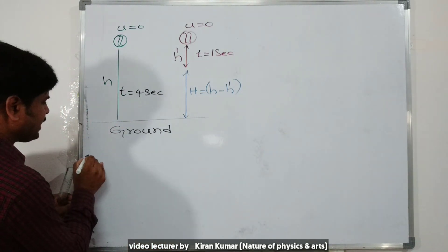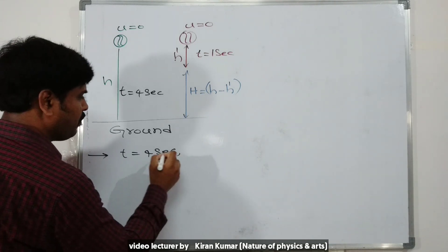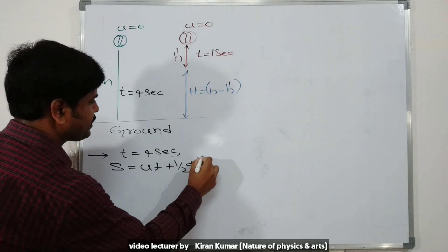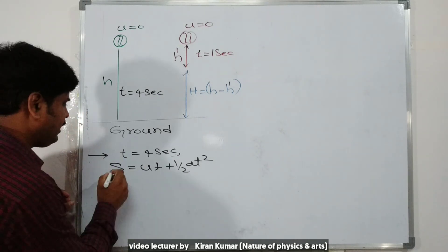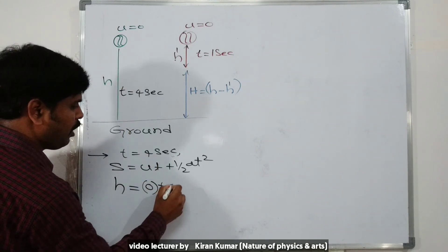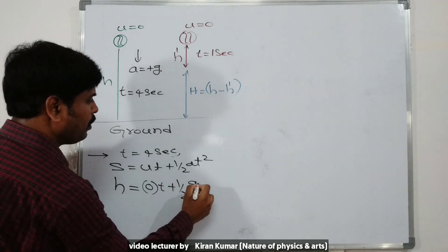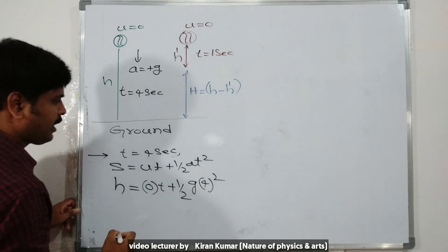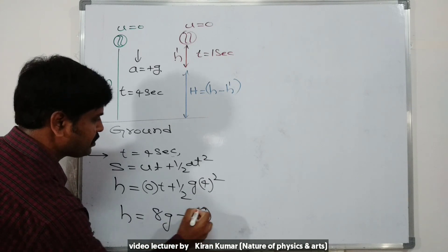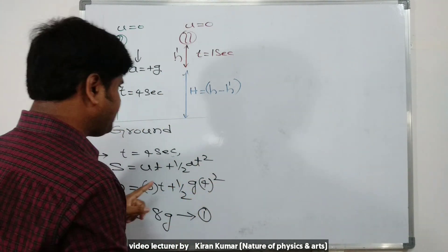Now for the derivation. First, for t equal to four seconds, the basic formula is s equals u·t plus half a·t squared. Here s is taken as h, initial velocity is zero, and since motion is downward, acceleration a equals positive g. So h equals half g into four squared, which gives h equal to 8g. This is taken as equation number one.